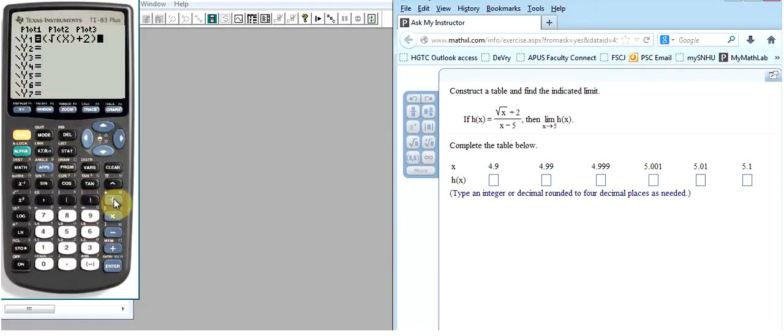Now to denote the fraction bar, we'll use the division key, and then I'm going to do one more set of parentheses here for the denominator. I'm going to type a parentheses and then X minus 5 and then close the parentheses. And again, I'm doing that so that the calculator understands that the only thing in the denominator of my function is X minus 5.